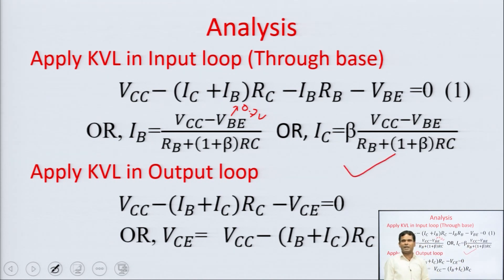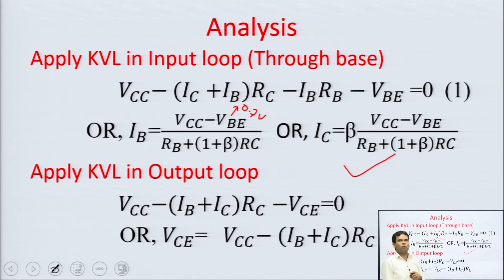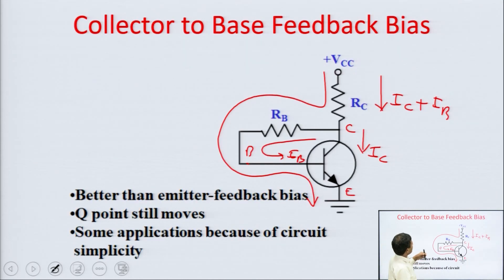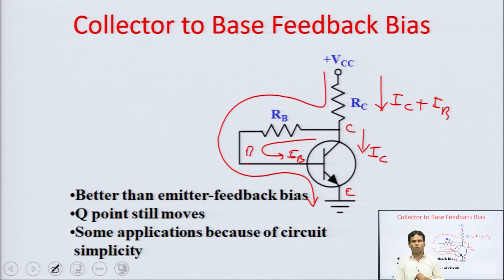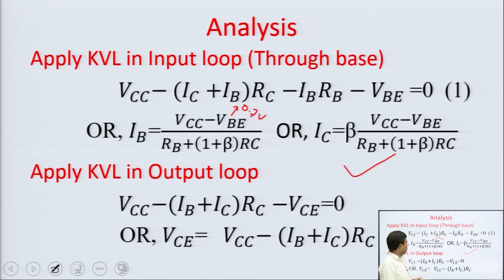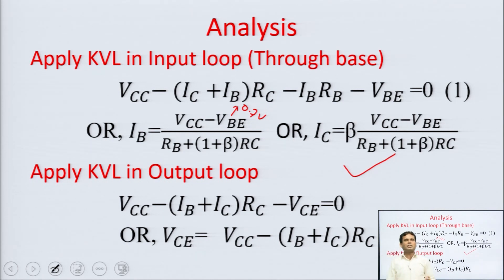Writing the output KVL equation: VCC minus (IC plus IB)·RC minus VCE equals zero. Therefore VCE equals VCC minus (IB plus IC)·RC. This gives us both values of the operating point — ICQ and VCEQ.